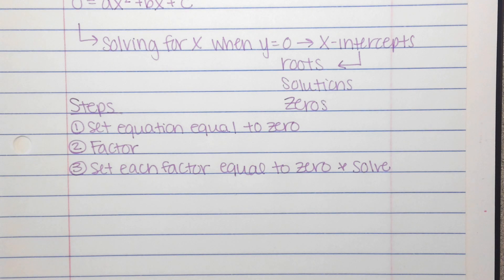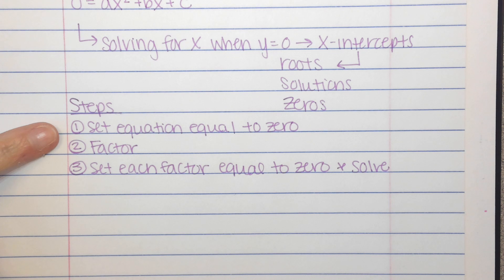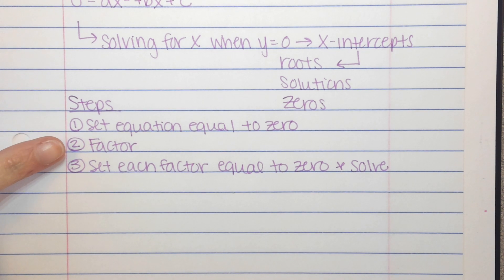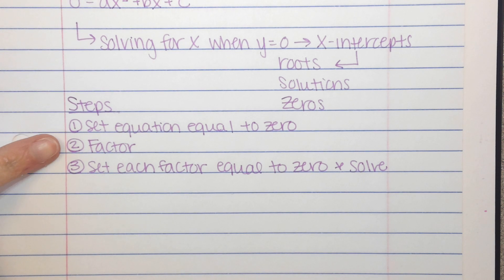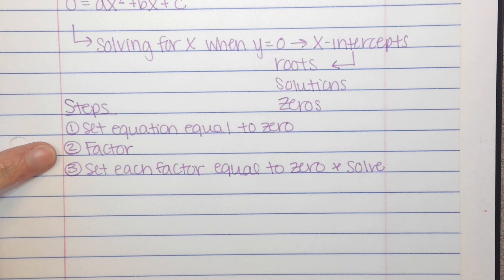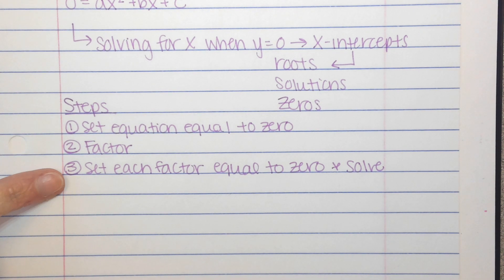So we have to get everything onto one side of the equal sign, then we can factor and solve. Here are the steps that we're going to follow. First, we're going to set each equation equal to 0. Then we're going to factor the side that has the variables and the numbers. Then we're going to set each of those factors equal to 0 and solve.